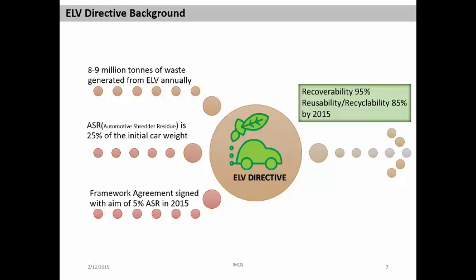The background of the ELV Directive: End of Life Vehicles usually generate between 8 to 9 million tons of waste in the community annually. After use, cars are shredded for recovery of materials, and the remaining residue — Automotive Shredder Residue or ASR — represents around 25% of the initial weight of the car, of which one-third is plastics. The French car industry, backed by the Ministries, signed on March 10, 1993 a framework agreement to reduce ASR from 25% to about 15% in 2005 and 5% in 2015. The ELV Directive was published in 2007, aiming at a recoverability rate of 95% and a reusability or recyclability rate of 85% by 2015.